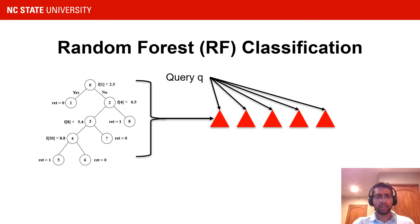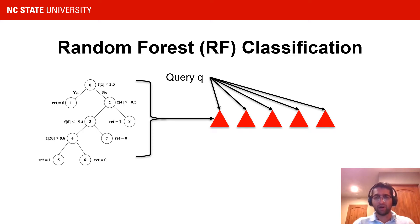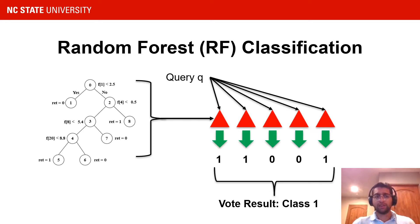A decision tree is part of a larger group of trees that compose a random forest. Each tree is typically unique and can lead to varying classification decisions. A query is sent as input to each decision tree in the forest, so for S queries and T trees, there are S times T tree traversals that take place. Lastly, there is a majority vote that takes place across all the trees to determine the final classification result for query Q. In this example, since the majority of trees return a value of 1, the final classification decision is class 1 for query Q.